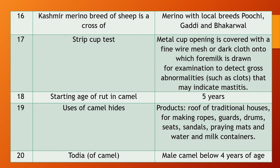Question 18. What is the starting age of rut in camel? We have already seen what rut is. The starting age of rut in camel is about 5 years.